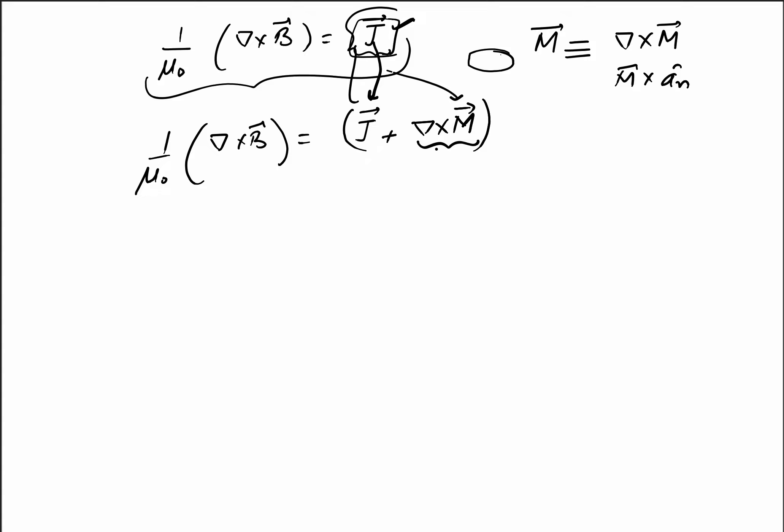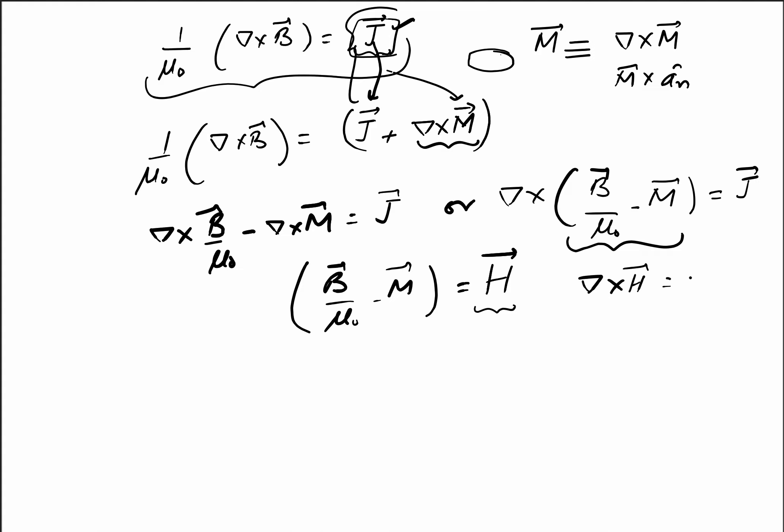Taking this to the left-hand side, since μ₀ is independent of ∇, we can write ∇×(B/μ₀ - M) = J_free. We define B/μ₀ - M as the magnetic field intensity H. Therefore, ∇×H = J_free.